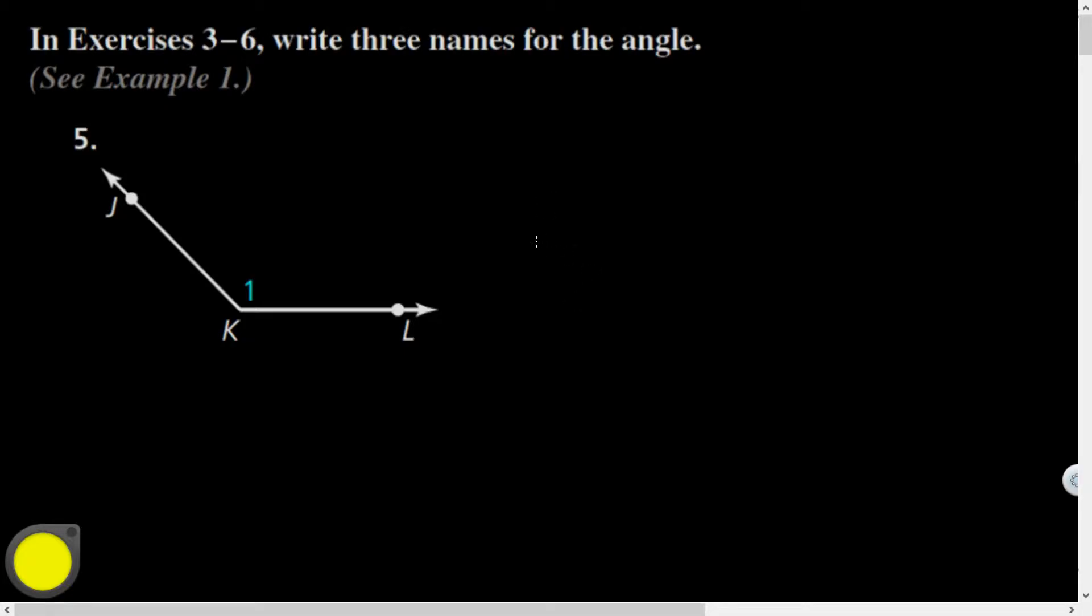Greetings and welcome. We're going over constructing, naming, and measuring angles. It says write three names for the angle. I could refer to this as angle K, angle 1, or by a formal name: first, middle, last initial, J-K-L.